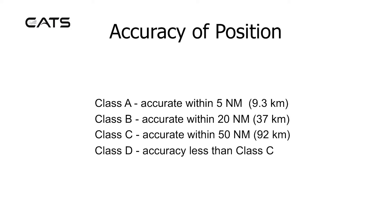Accuracy of position: class A is accurate within 5 nautical miles, class B is accurate within 20 nautical miles, class C is accurate within 50 nautical miles, and class D is an accuracy less than class C.